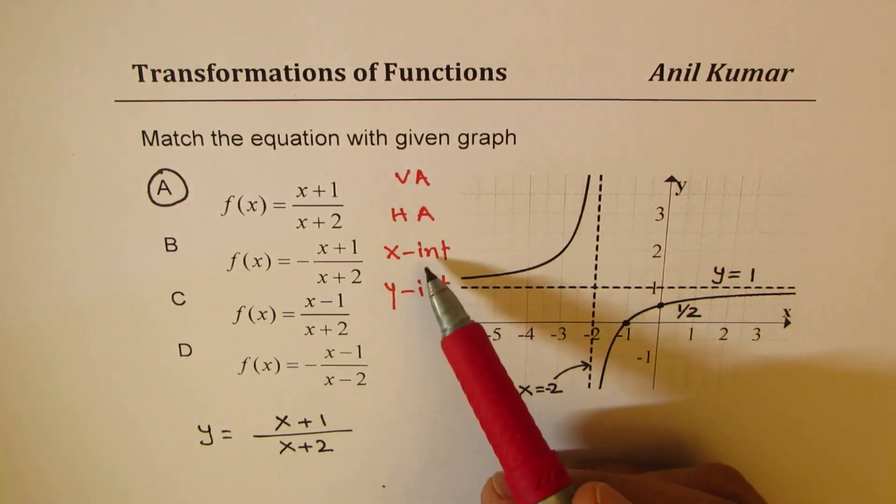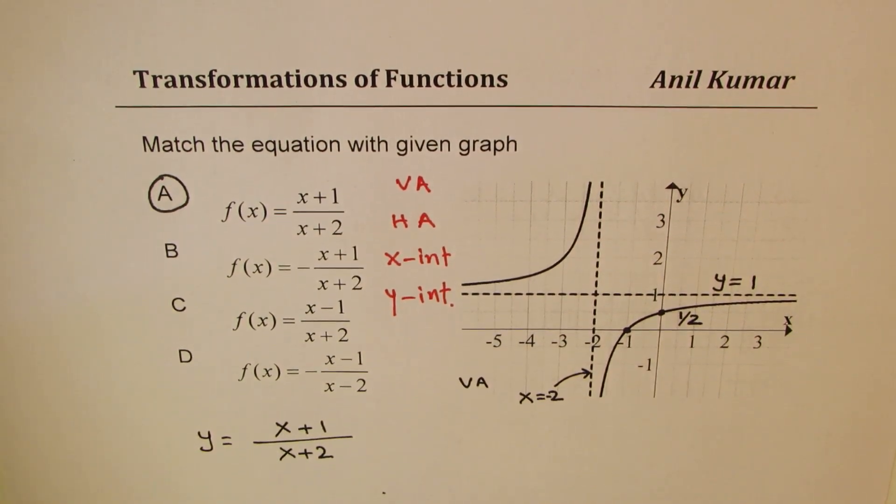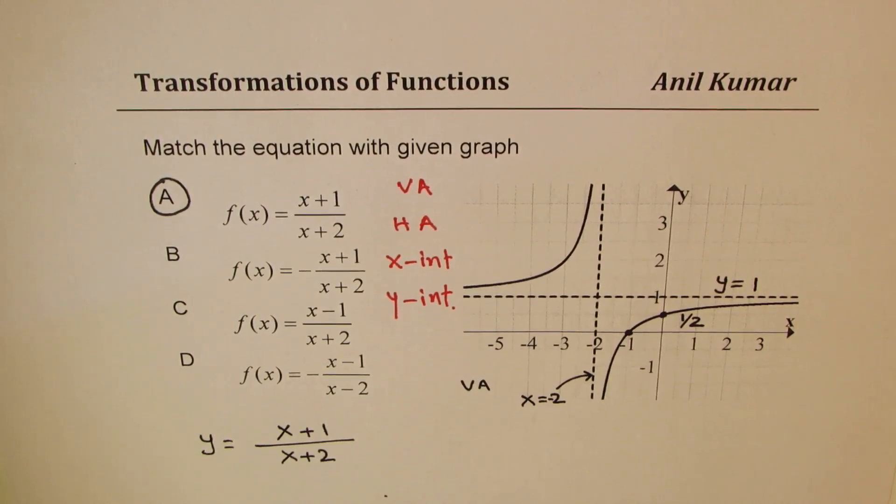The two asymptotes and the two intercepts will help you to match the graph with the given equation. I hope that makes sense. Thanks for watching. Feel free to write your comments and share your views. If you like it, subscribe to my videos. Thank you.